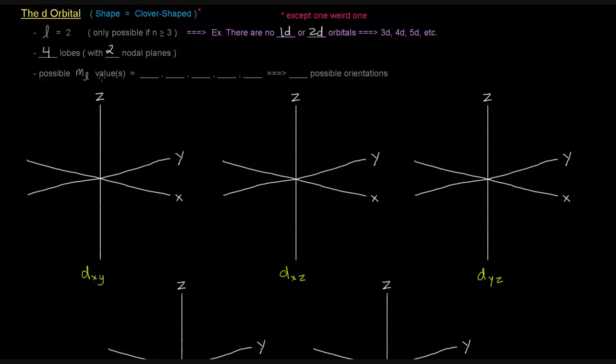The possible m sub L values here are going to be negative L to positive L, so negative 2, negative 1, 0, positive 1, and positive 2. So that's five possible orientations in space. So that's what's shown here.